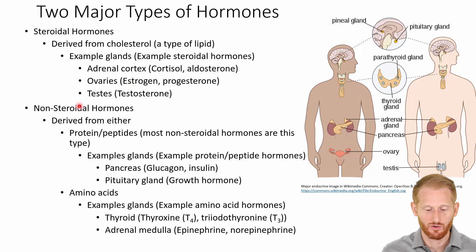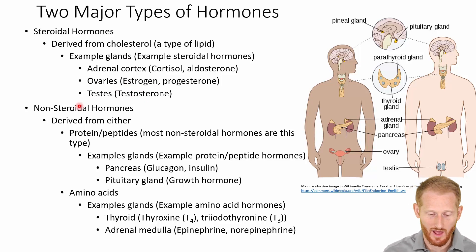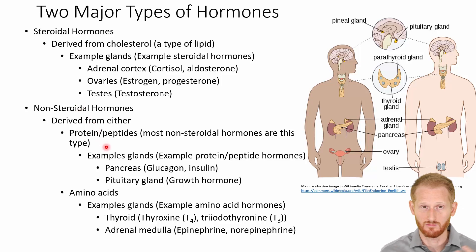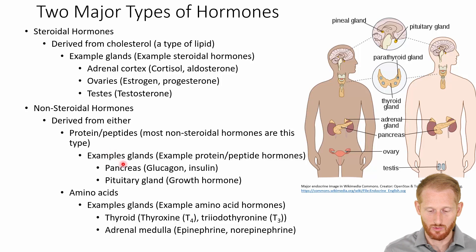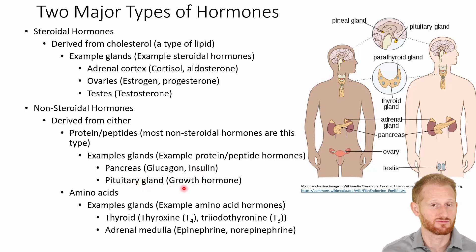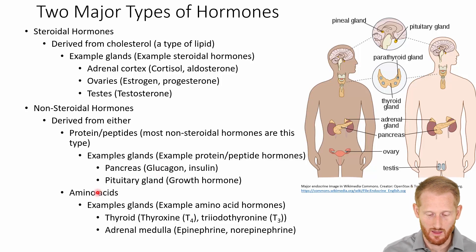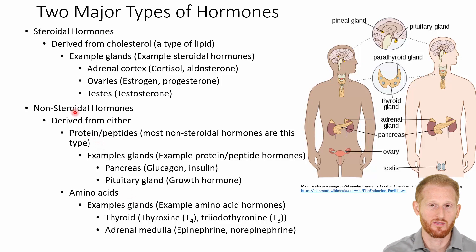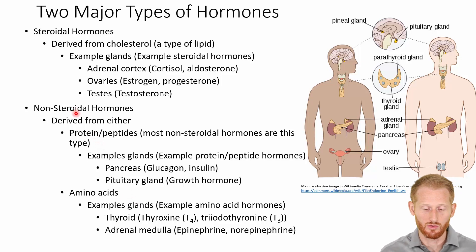For the non-steroidal hormones, there's some sort of protein, peptide, or amino acid, and those come from lots of different glands as well. Some example glands and hormones are the pancreas, which releases glucagon and insulin, and the pituitary gland, which releases growth hormone. All of these are forms of protein or peptide hormones.